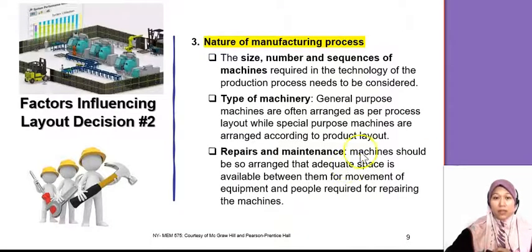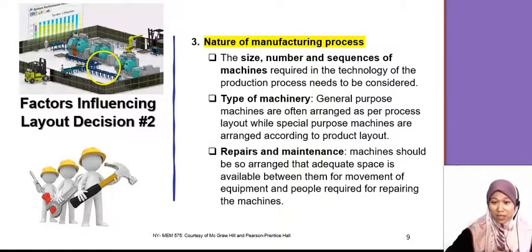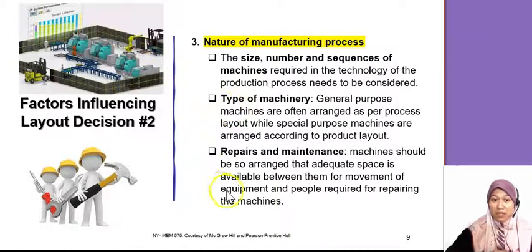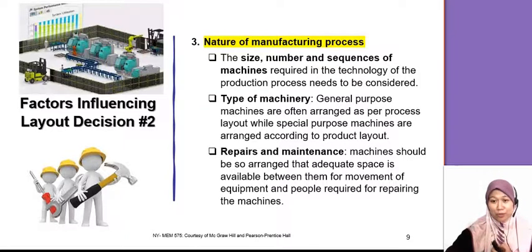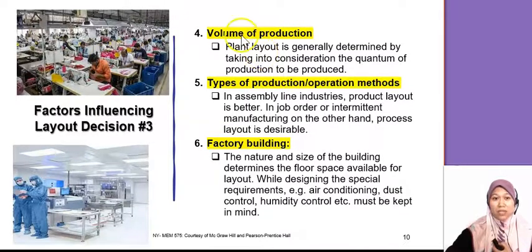You also need to consider the nature of the manufacturing process — what processes are involved, how many machines you have, and how big the machines are. Sometimes machines need wiring, ventilation ducting, and so on. Also consider repair and maintenance access — your maintenance team must be able to access the machine. If you place machines too close to the wall because of limited space, the repair team cannot access the back for maintenance.